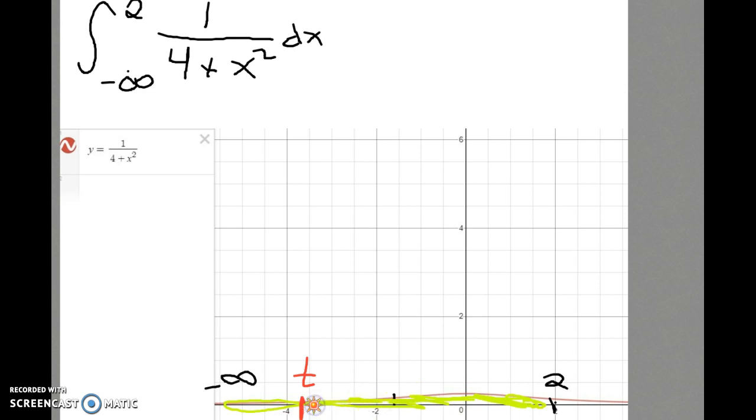We do that a bunch of times with T approaching negative infinity. So we find the area under the curve from, let's say, negative 1000 to 2, and then from negative 2000 to 2, negative 3000 to 2, and we see if that area is approaching any finite value or just increasing without bound.